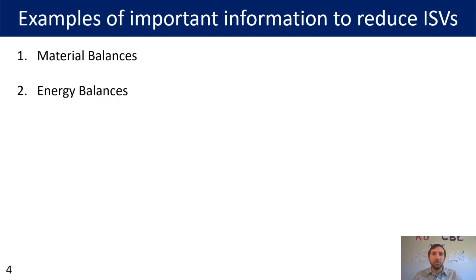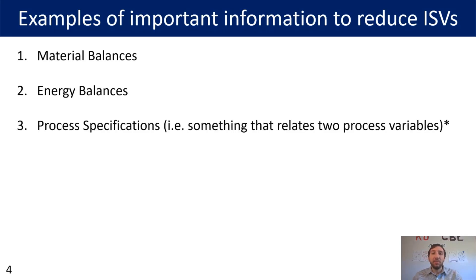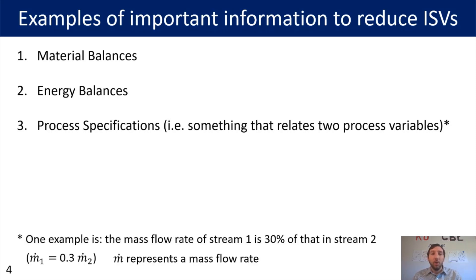For the first part of our class we're mostly going to be focusing on material balances; energy balances will come into play in the second half of the class. Another thing we can use to reduce our degrees of freedom is a process specification, and that's something that relates to process variables. One example is: the mass flow rate of stream 1 is 30% of that in stream 2. So that means Ṁ₁ = 0.3 × Ṁ₂, where Ṁ represents a mass flow rate — meaning stream 1 is 30% the flow of stream 2.